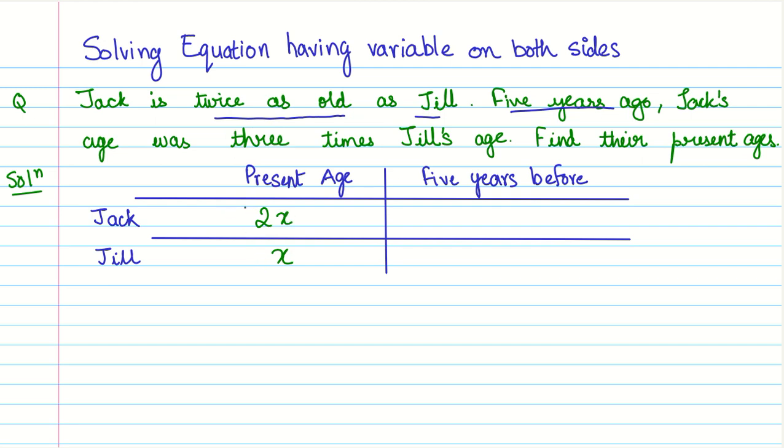We are told that five years ago, Jack's age was three times Jill's age. But before we apply this condition, what will be their ages five years before? So we just simply subtract five years from both of their ages. So Jack is going to be 2X minus five years. And Jill is going to be X minus five years. Now, we are given a condition that is giving a relationship between their ages that was five years before.